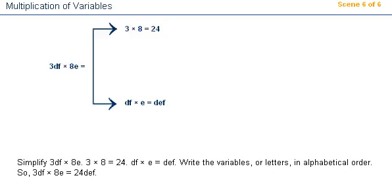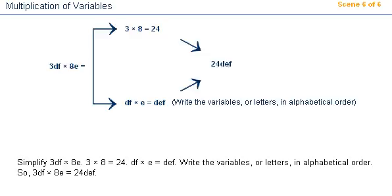Write the variables or letters in alphabetical order. So, 3DF times 8E equals 24DEF.